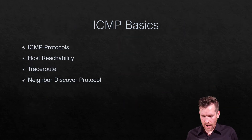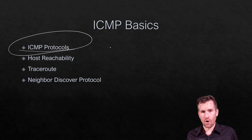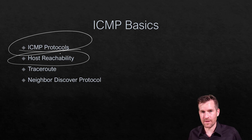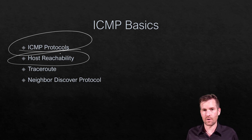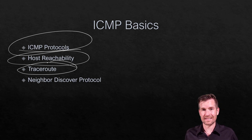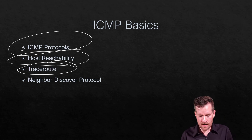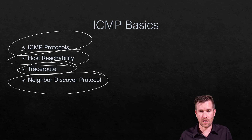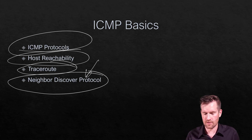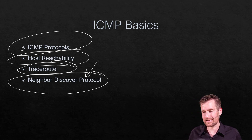There you have it — ICMP basics. We talked about the ICMP protocols, we talked about host reachability and using ping to reach out to hosts and the information we get back from them, both from IP version 4 and IP version 6. We talked about traceroute and how it can give us additional information beyond what just ping gives us. And then we talked about neighbor discovery protocol, which I go much more in depth into in another video.